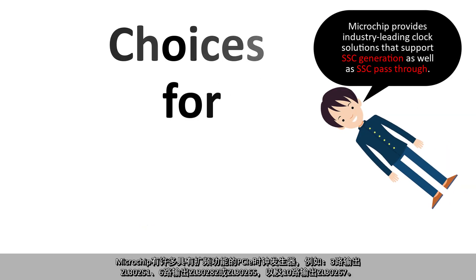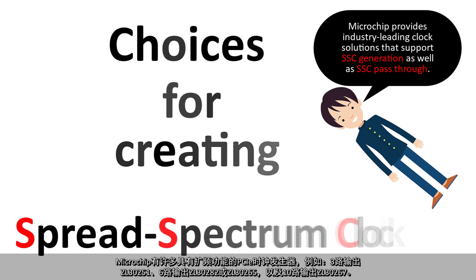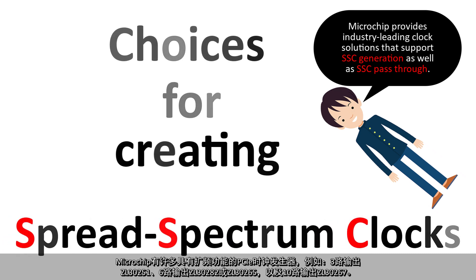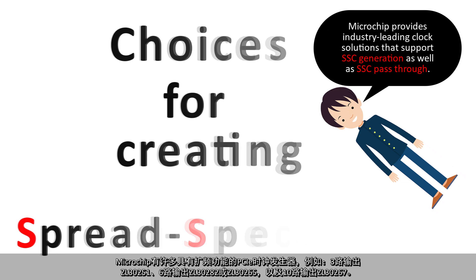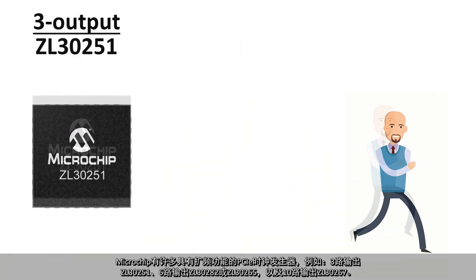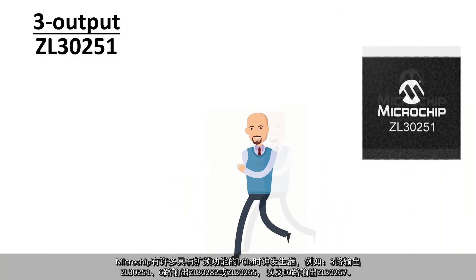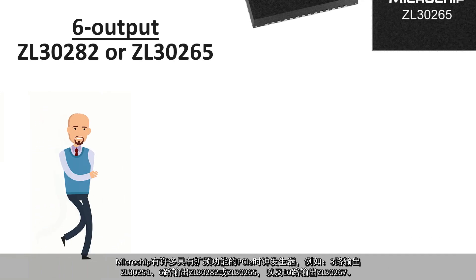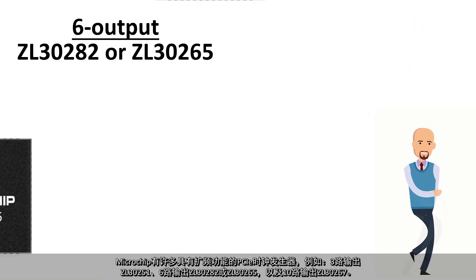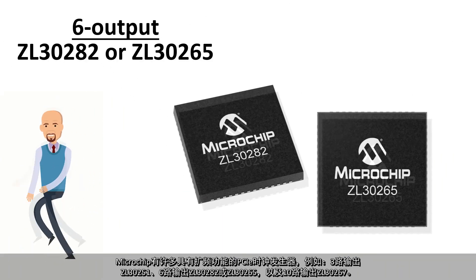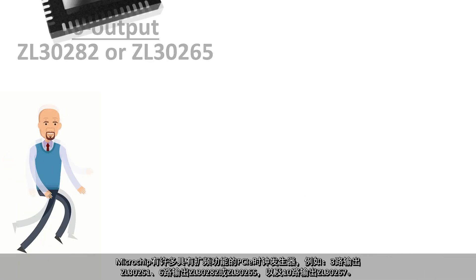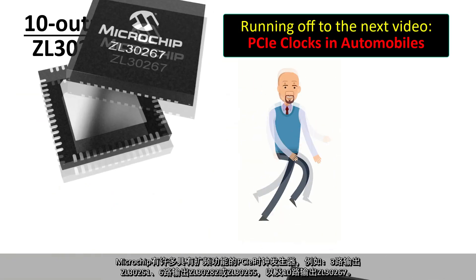Microchip has many PCIe-compliant clock generators with spread spectrum capabilities such as the 3-output ZL30251, the 6-output ZL30282 or ZL30265, and the 10-output ZL30267.